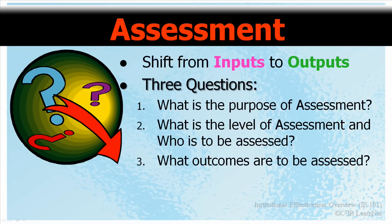With respect to the second question — what is the level of assessment and who is to be assessed — this would cover such things as the individual student or groups, and the groups could be courses, departments, college, gender, race, etc. Finally, with respect to the third question — what outcomes are to be assessed — here we would look at such factors as knowledge, skills, attitudes, behavior, and so on.